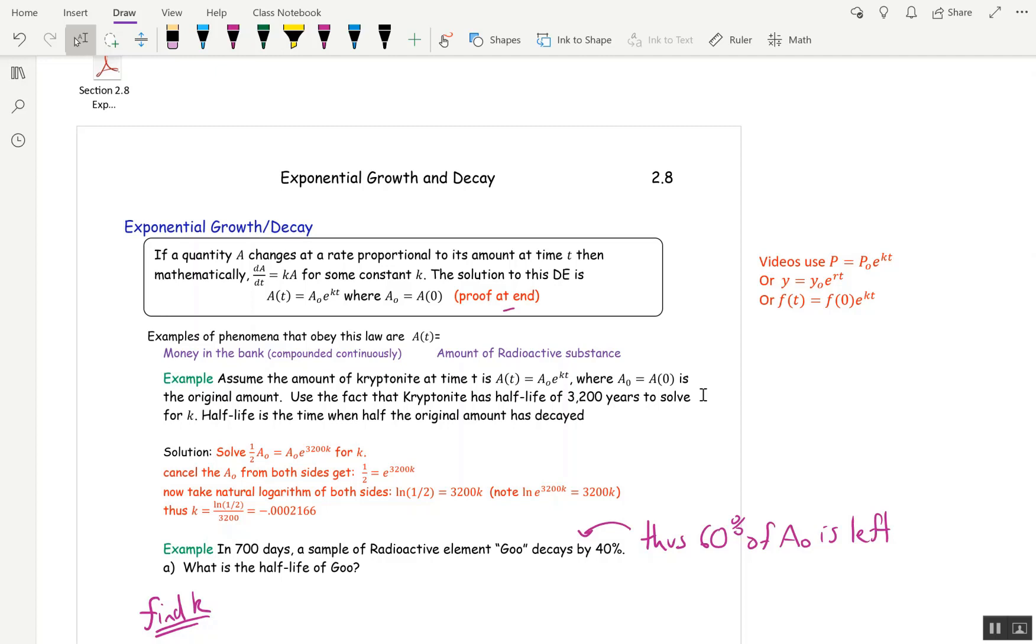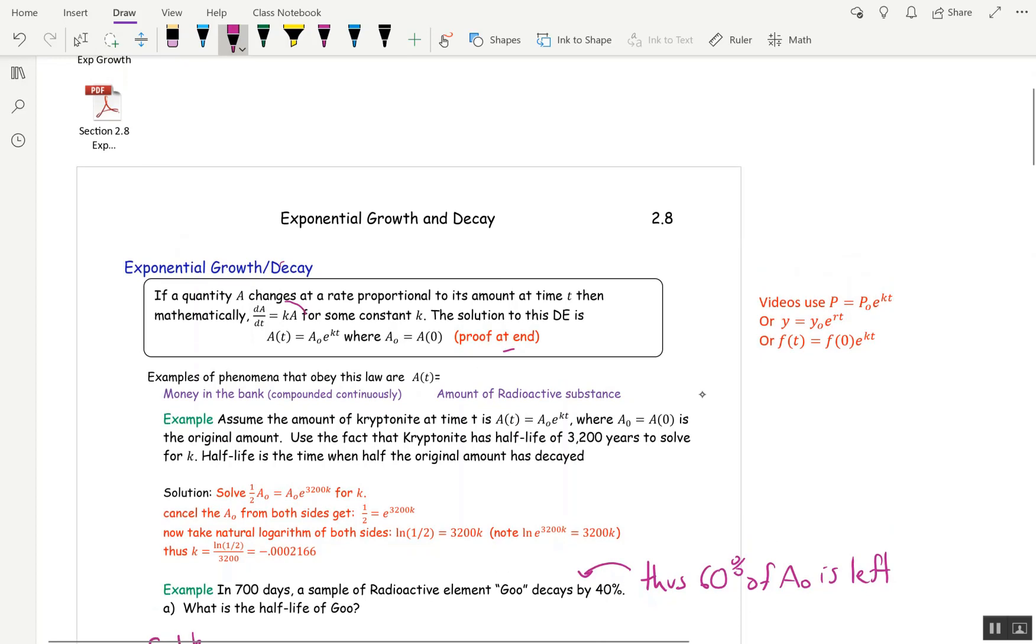So the guiding principle here is that if a quantity A changes at a rate proportional to the amount there at time t, the way we see that mathematically, is dA/dt = Ka, then the solution is A(t) = A₀e^(kt), where A₀ is the initial amount. It's A(0).